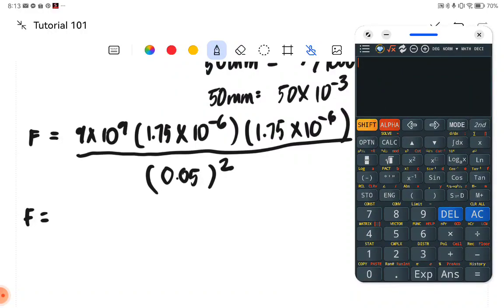So let's try it using our calculator. We have 9 times 10 raised to 9, and it's multiplied by 1.75 times 10 raised to negative 6. Another 1.75 times 10 raised to negative 6, all over 0.05 squared.